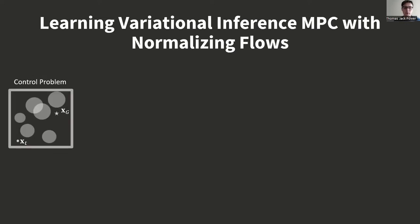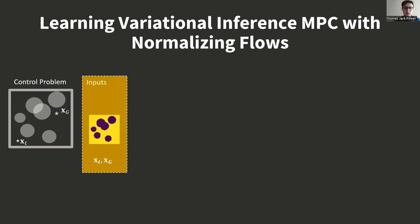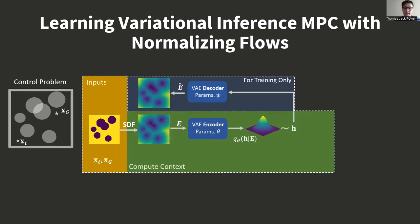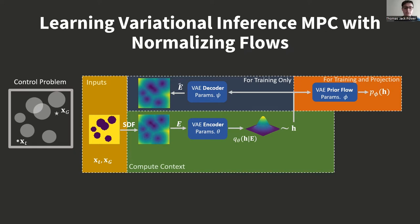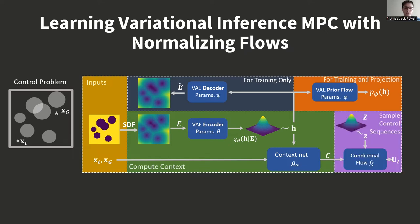Now I'll go through our proposed sampling method. The inputs are the start, goal, and environment. We use a variational autoencoder to encode the environment to a latent representation H. We use a normalizing flow as the latent space prior, learned during training. We encode H, the start and goal, to a context vector. The control sequence normalizing flow takes the context vector and transforms normally distributed samples into low-cost control sequences.